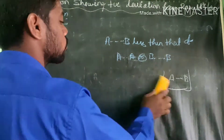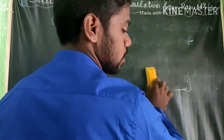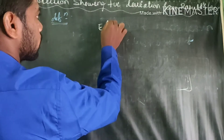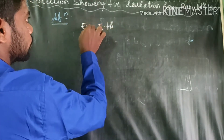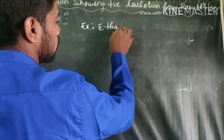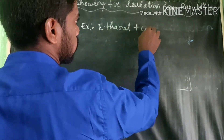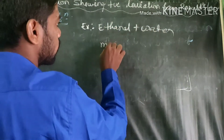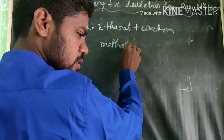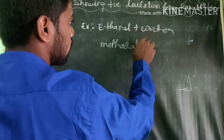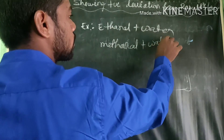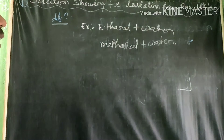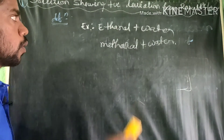What are the examples for this positive deviation from Raoult's law? The examples are: ethanol plus water, and methanol plus water. There are many examples, but you have to remember at least two — ethanol and water, and methanol and water.